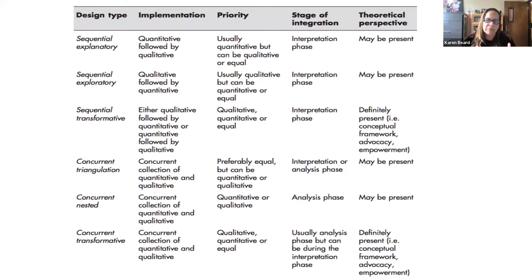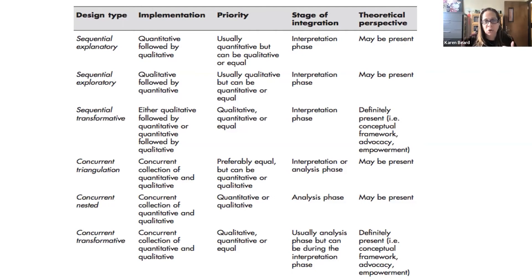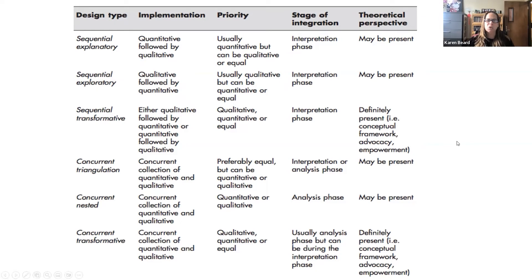This is Creswell's table on design types. The implementation and the priority — where you start, do you start with quantitative, qualitative, or collect both equally at the same time concurrently — and also the stage of integration is important. Could the mixing be at the initial posing of questions, or is it typically in the interpretation phases? Creswell tends to lean more into the interpretation phases, understanding what all the data means when it's put together. He also acknowledges that theoretical perspectives may be present in sequential designs.